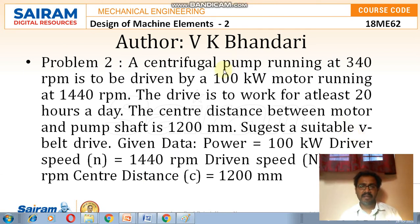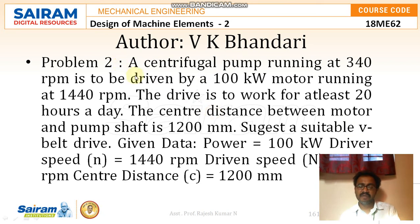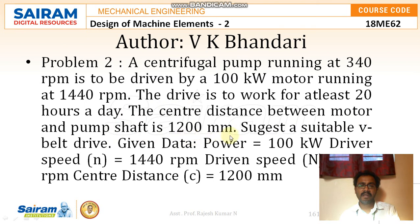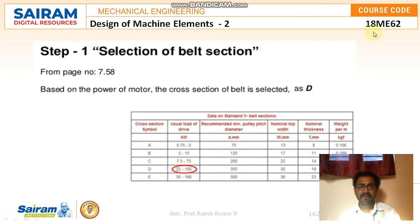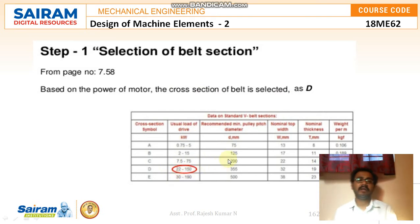Moving to the next problem — a V-belt problem. A centrifugal pump running at 340 rpm is to be driven by a 100 kW motor running at 1440 rpm. The drive is to work for at least 20 hours a day. The center distance between the motor and pump shaft is 1200 mm. Suggest a suitable V-belt drive. Given: Power = 100 kW, driver speed = 1440 rpm, driven speed = 340 rpm, center distance = 1200 mm. Based on the motor power, the belt cross-section selected is D, as the load range of 20 to 150 kW falls under the D category.